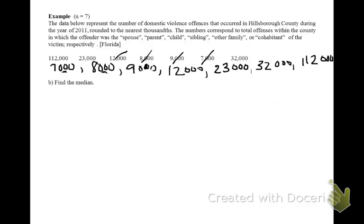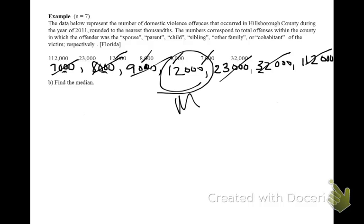A second way you could have gotten this answer is to think of marking a number off from the top and bottom of the data set — tick away your smallest, largest, smallest, largest, smallest, largest — and it leaves the number in the middle, the median. This is the way you may have been taught in middle school. In college and in my class specifically, you're going to have to use the formula. If you do this tick mark method, I will not give you credit.